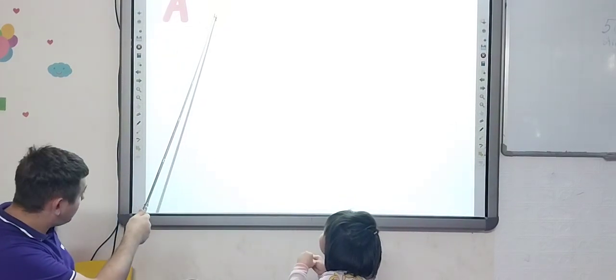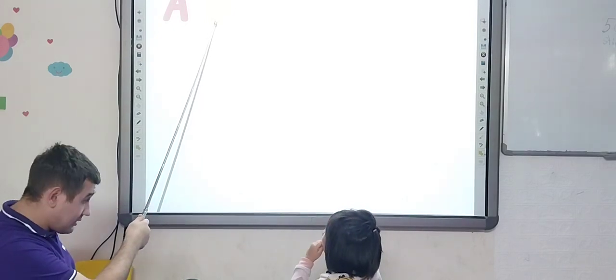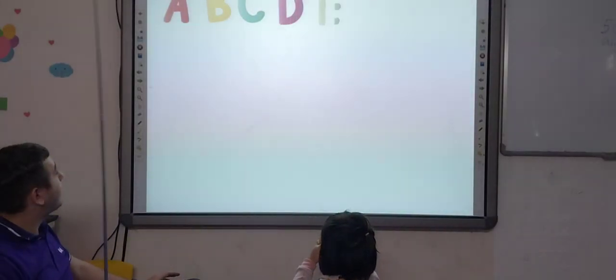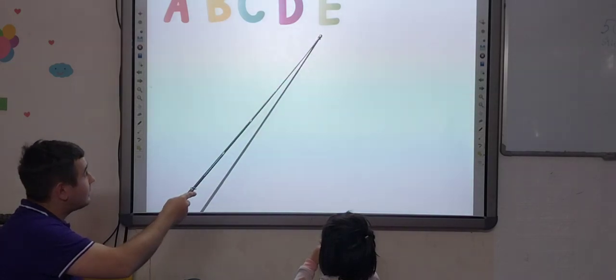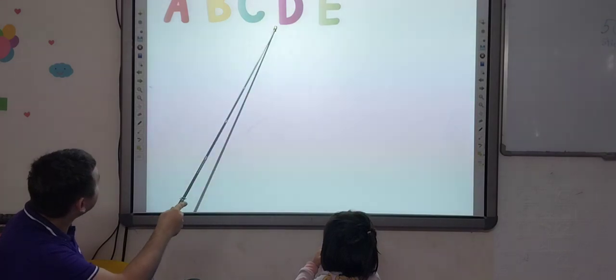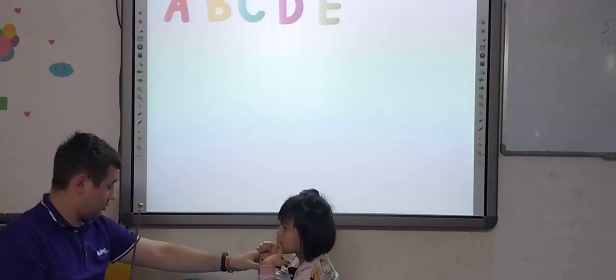We have A, B, B, B, right? Okay, and what letter is this? C. C, very nice. And what letter is this? Let's go, E. Very good, that's like an E. Oh, put your hands down, put your hands down, my friend.